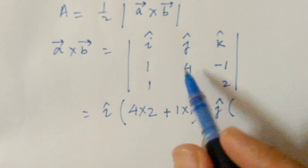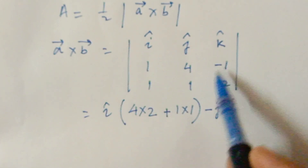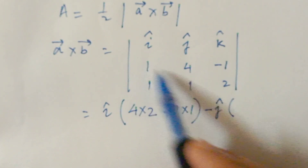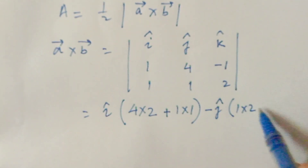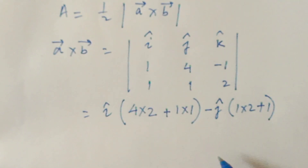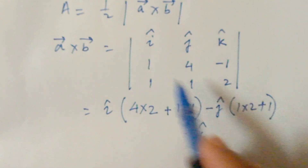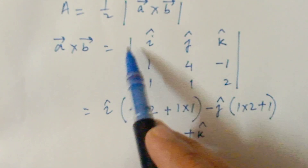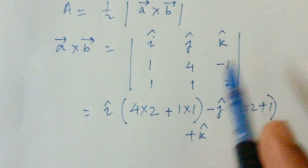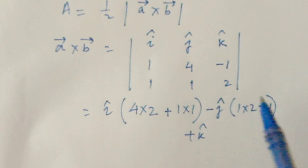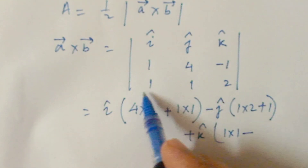For minus j, leave its column and row, leaving 1, minus 1 and 1, 2. Then 1 into 2 minus minus 1 into 1. For plus k, leave its column and row, leaving 1, 4 and 1, 1. Then 1 into 1 minus 1 into 4.